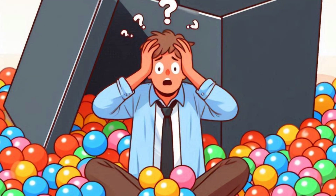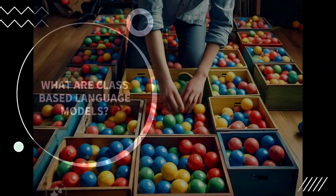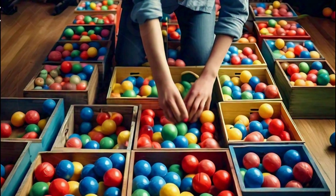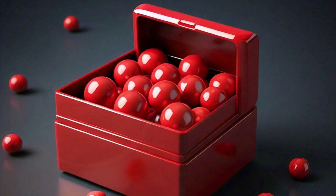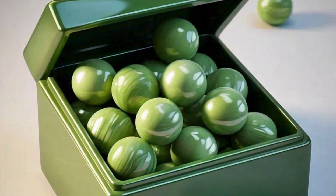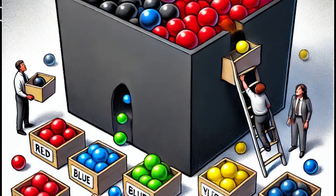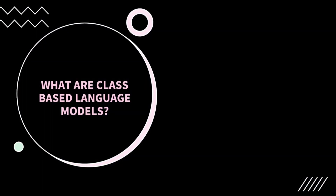This process continues until you pick a red ball for me. Don't you think that this is a time-consuming process? Yes, definitely it is. Instead, what I would suggest is to maintain a different box for each color. For red color balls, maintain a red box, and for green color balls, maintain a green box. When I ask for a red ball, you directly go to the red box and pick one. Compared to the previous process, it is very easy and less time-consuming.